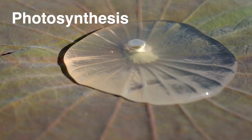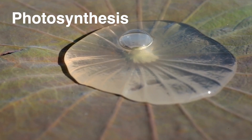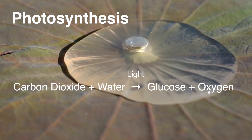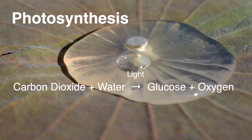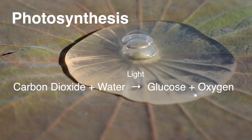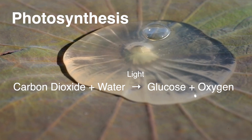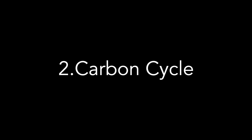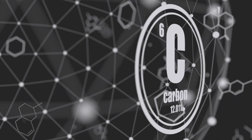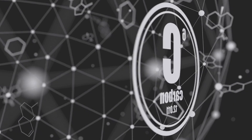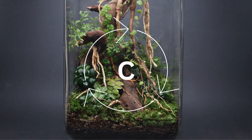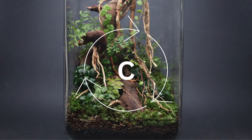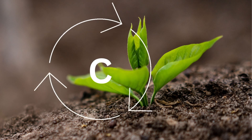Photosynthesis is the process used by plants in which they use light, carbon dioxide, and water to prepare their food. The carbon cycle and the water, or hydrologic, cycle come into play here. Carbon is an essential element for plant growth and is cycled between the plants, soil, and air in a closed terrarium, just as it is in nature.